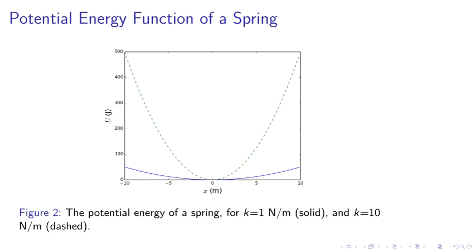Potential energy function of the spring. So here in figure 2, we've plotted different potential energies for K equals 1 newton per meter solid, and K equals 10 newton per meter dashed. So we see that the greater the spring constant, the greater the potential energy for a given displacement.